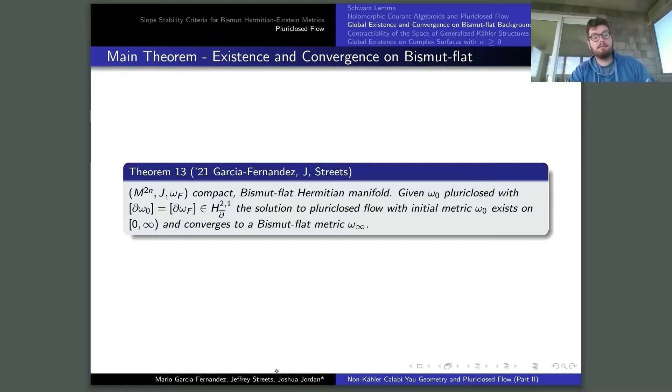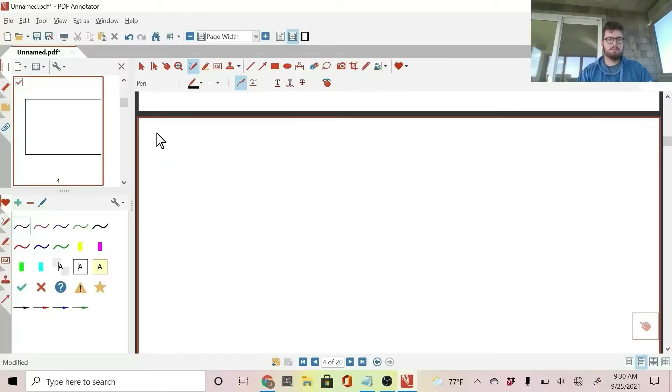From there, from these a priori estimates, we can actually prove existence and convergence on bismuth flat manifolds. So given a compact bismuth flat hermitian manifold and omega naught defining the same holomorphic vector bundle as a current algebroid, the solution to pluriclosed flow with that initial metric has to exist for all time and it has to converge to a bismuth flat metric. All right, so bismuth flat, existence, convergence.